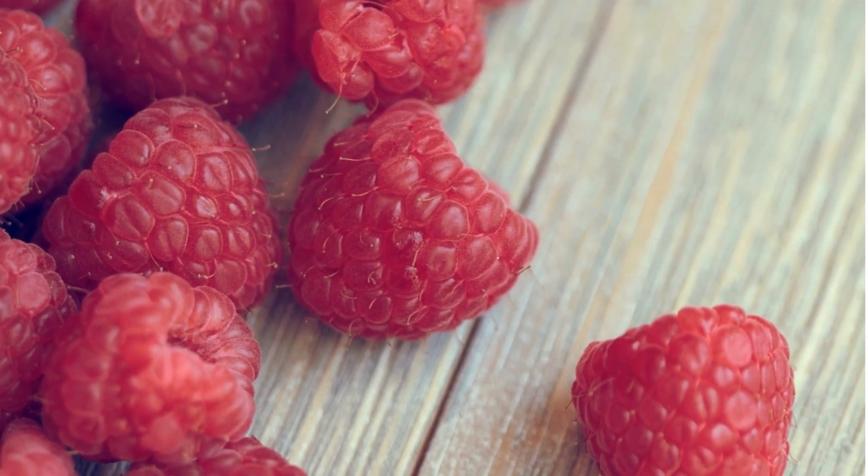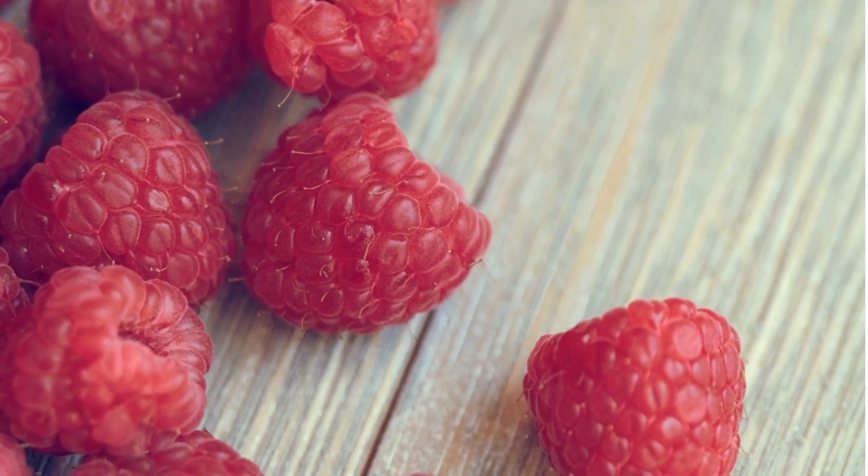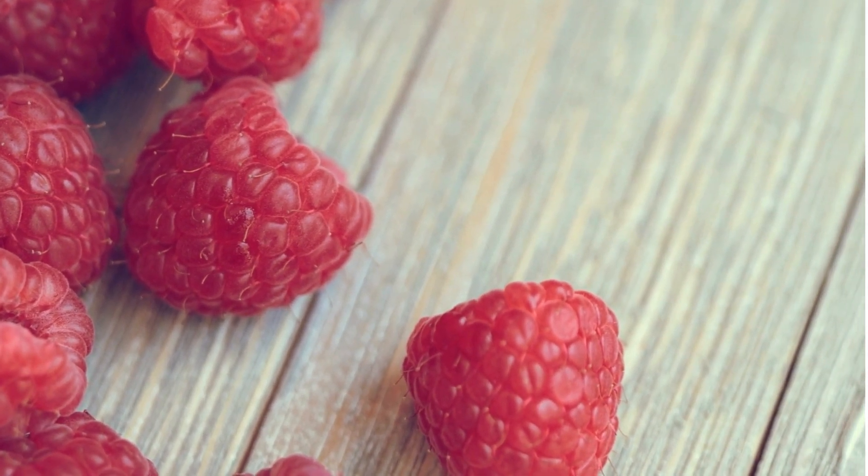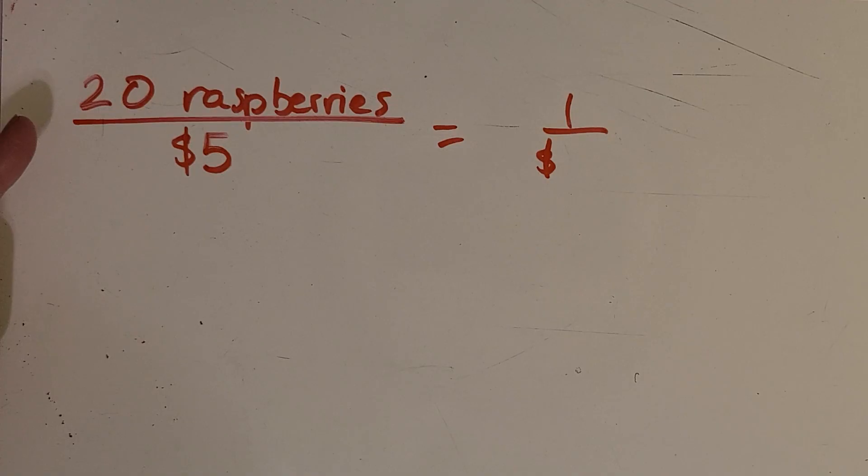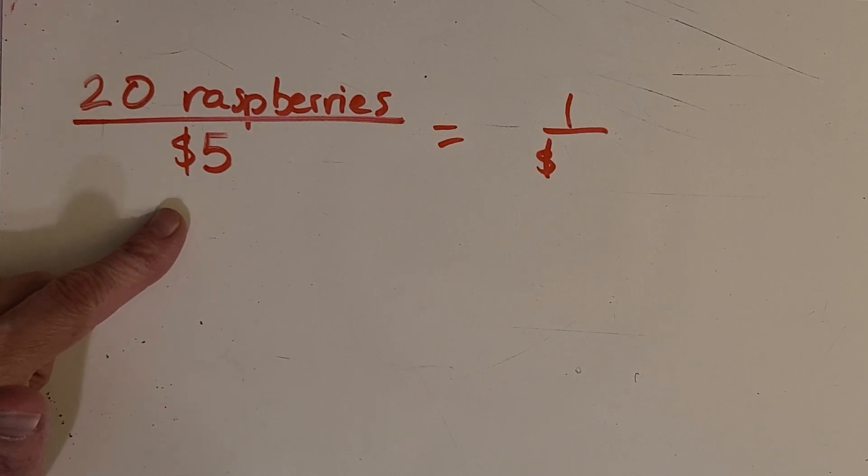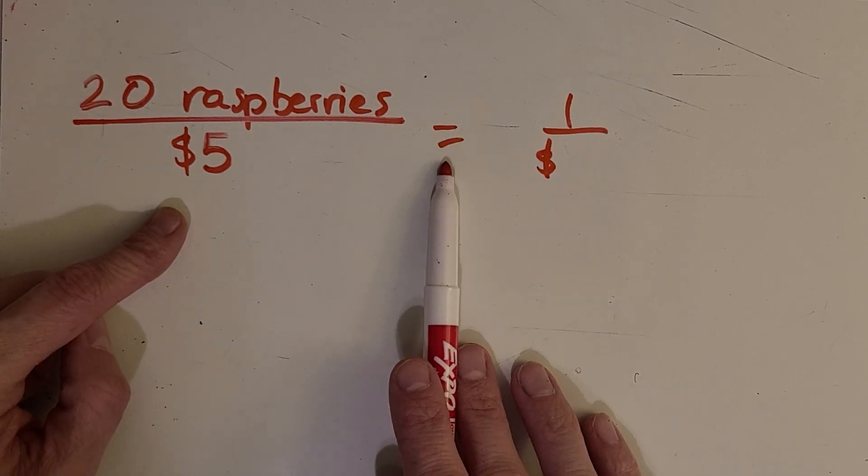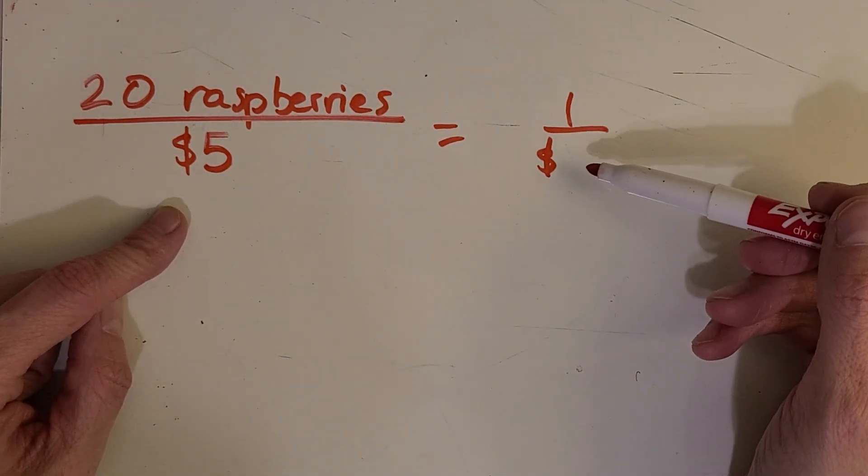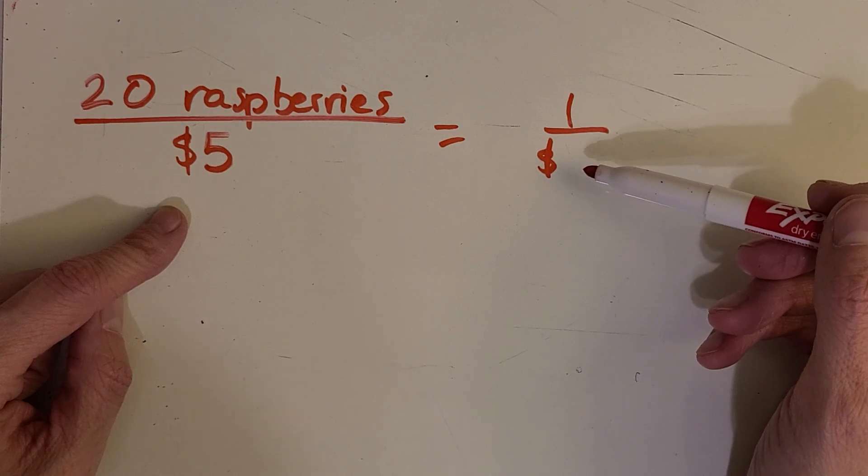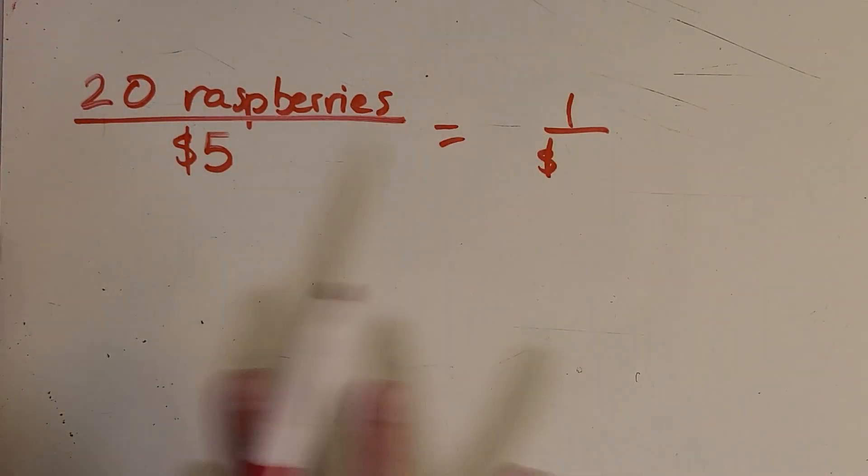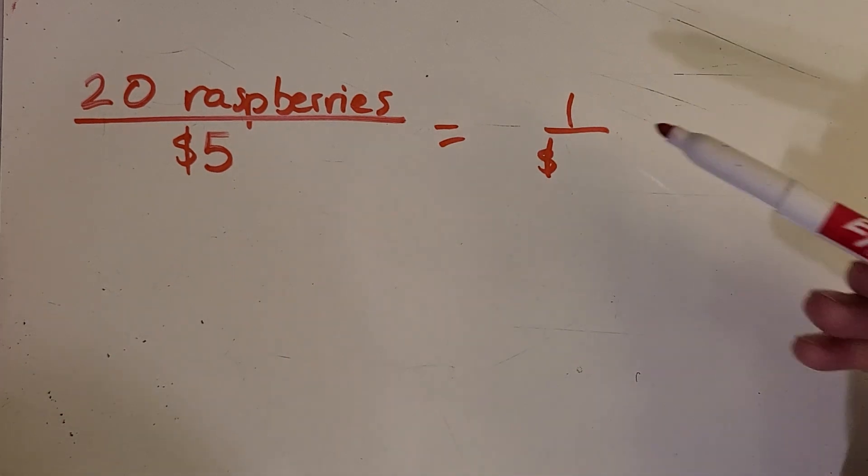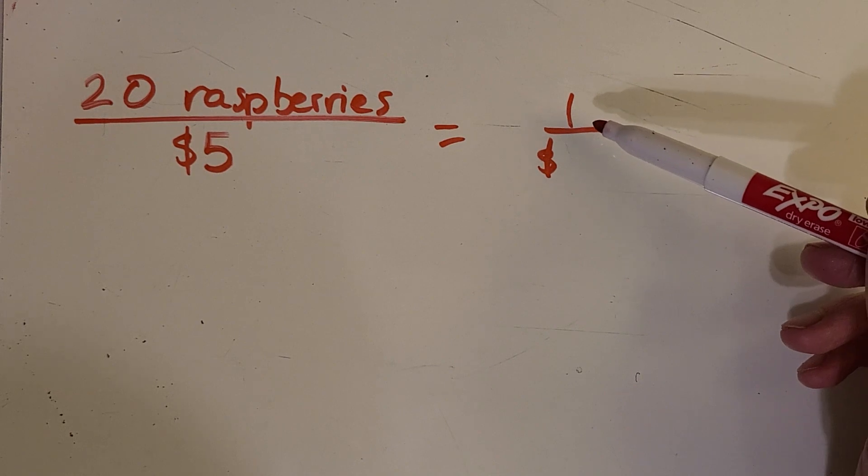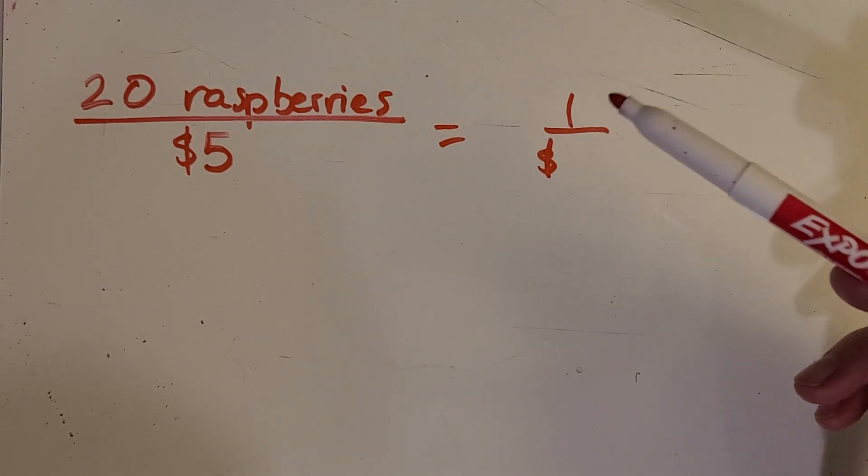Okay, so another type of proportion problem we can do is based on money as well. So we can say that, you know, a pack of 20 raspberries costs $5 at the grocery store. And we want to know how much one raspberry costs. So this is very similar to my last video on unit rates. So this is looking like a proportion, but it's also the same type of math we were doing in the last video, where we were finding the cost for one thing.